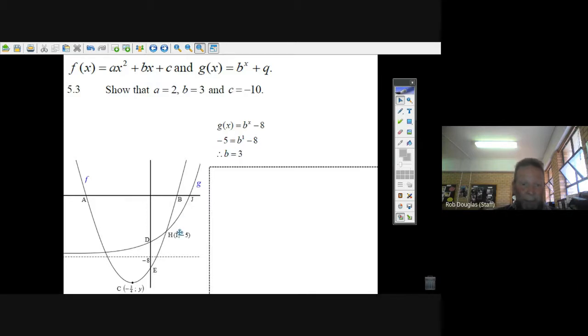We add 8 to both sides. We get b equals 3. And all we did is we substituted in this point, 1 and minus 5, into this equation. So now we've got b equals 3.